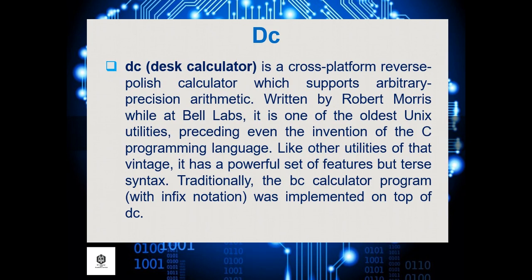DC, or desk calculator, is a cross-platform reverse Polish calculator which supports arbitrary precision arithmetic. Written by Robert Morris at Bell Labs, it is one of the oldest Unix utilities, preceding even the invention of the C programming language. Like other utilities of that vintage, it has a powerful set of features but terse syntax. Traditionally, the BC calculator program with infix notation was implemented on top of DC.